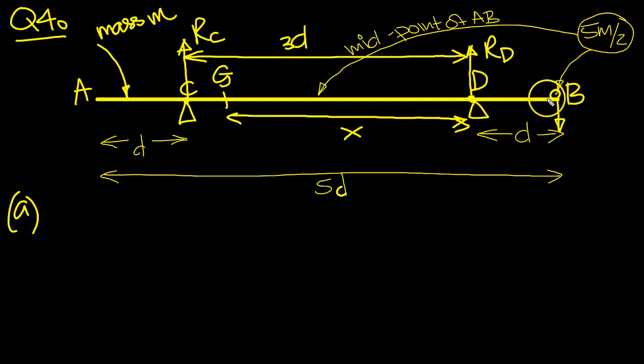Now the mass is placed here, so the 5M over 2 will be a weight acting down, 5MG over 2. The weight of the rod is M, so this is MG. There's a reaction at C and a reaction at D.